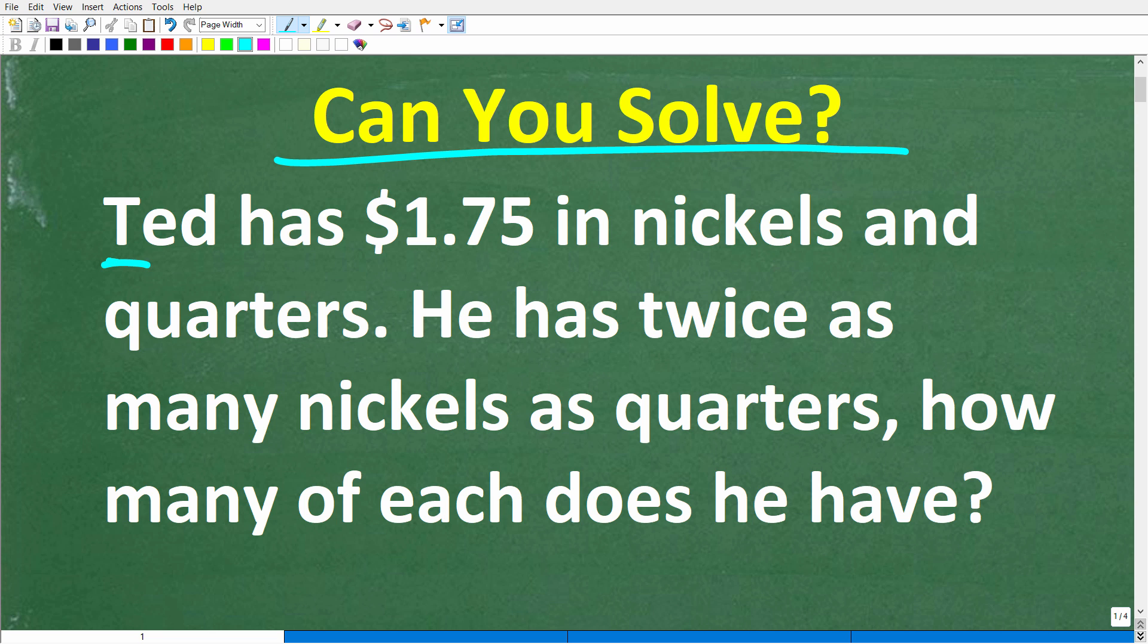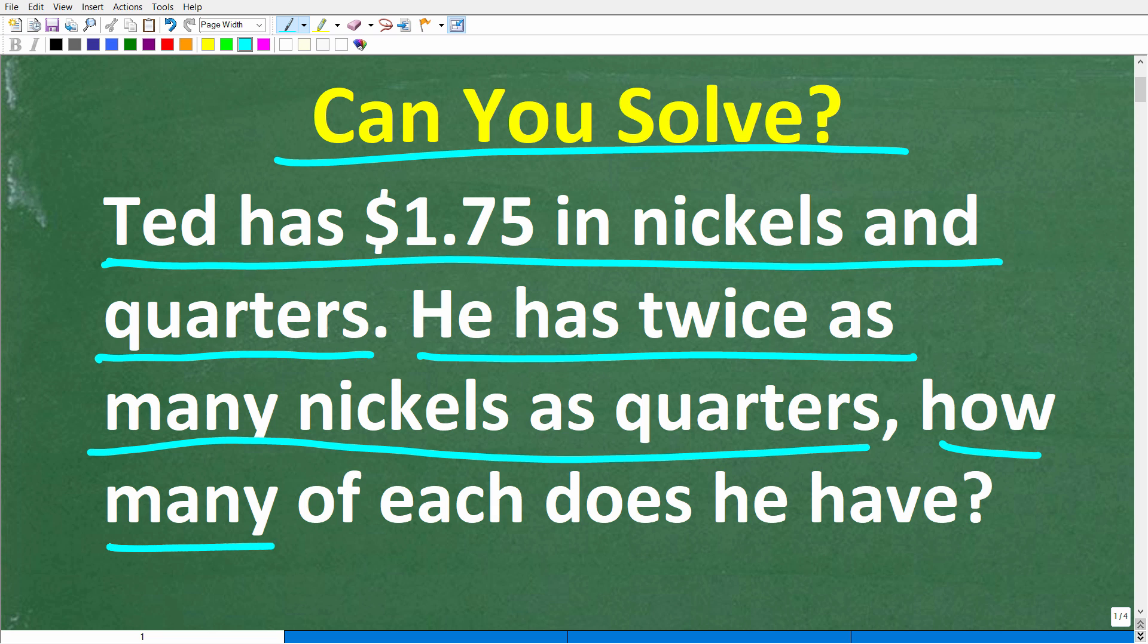It says, Ted has $1.75 in nickels and quarters. He has twice as many nickels as quarters. How many of each coin does he have? All right, so once again, feel free to use a calculator. But if you can figure this out, go ahead and put your answer into the comment section.